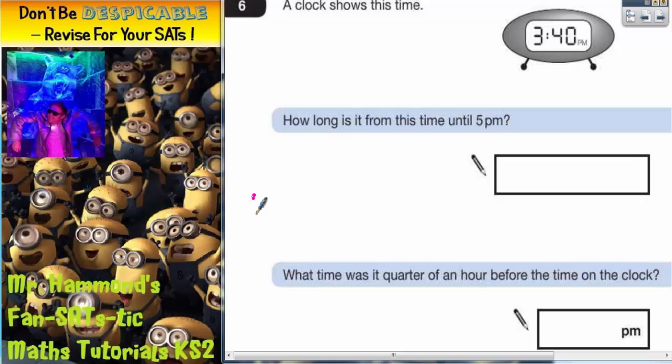Well if we start with doing a timeline, so we've got 3:40pm. If we round that up to the next whole hour, which would be 4pm,